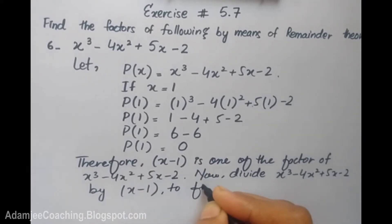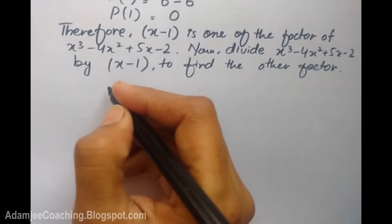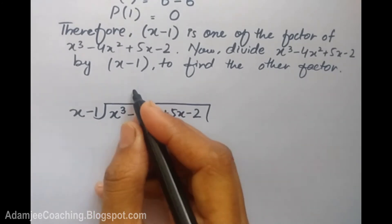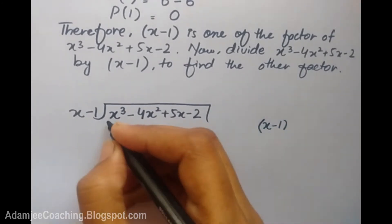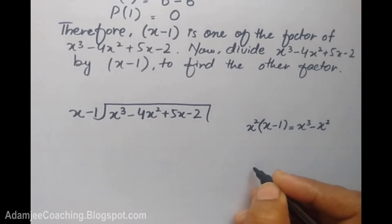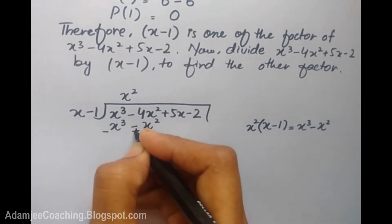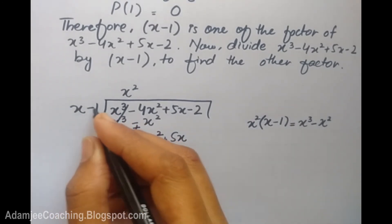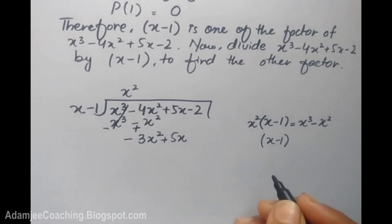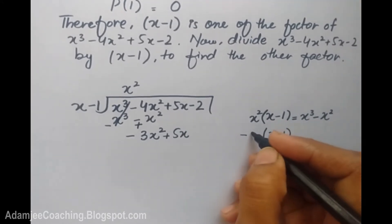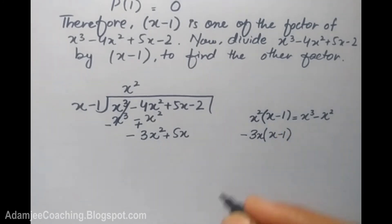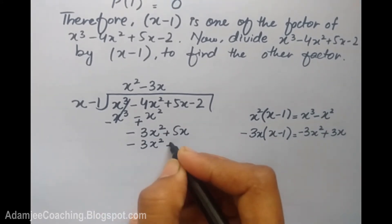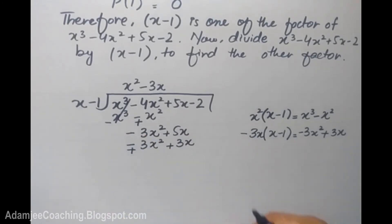The given expression divided by the factor we found gives the other factor. We divide x cube minus 4x squared plus 5x minus 2 by x minus 1. Multiplying x squared by x minus 1 gives x cube minus x squared. Subtracting, we get minus 3x squared plus 5x minus 2. Then multiplying minus 3x by x minus 1 gives minus 3x squared plus 3x. Subtracting gives minus 2x minus 2.